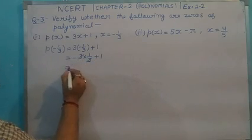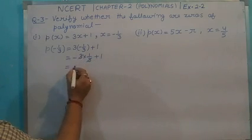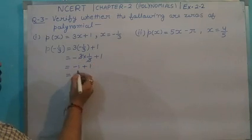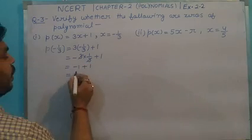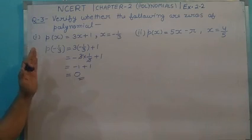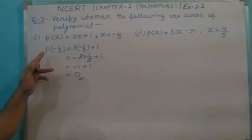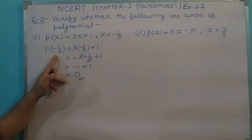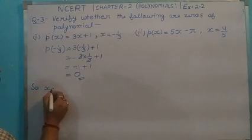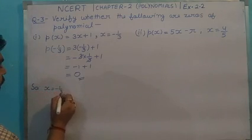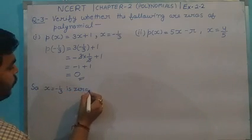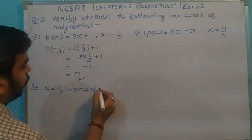3 and 3 cancel. Final value of this part comes to minus 1 and here is plus 1. Minus 1 plus 1 on calculation become 0. Finally, the result of polynomial at value -1/3 becomes 0. So x = -1/3 is 0 of polynomial.